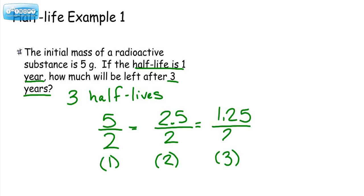we're again going to divide that by 2, and we get 0.625 grams. So if we have a half-life of 1 year and start with 5 grams, then in 3 years, we'll have 0.625 grams of that original substance.